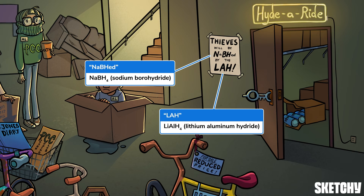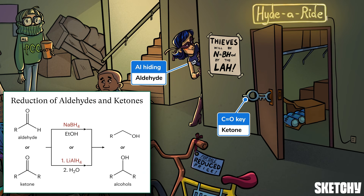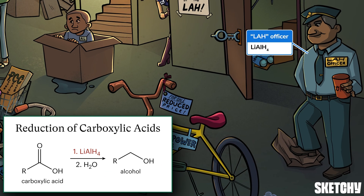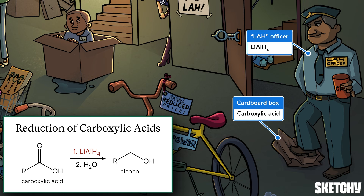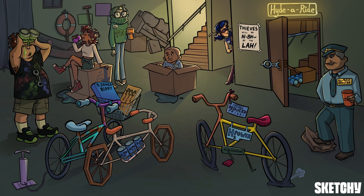Both ketones — represented by this key — and aldehydes — represented by another Al hiding — can be reduced by sodium borohydride or lithium aluminum hydride. In both cases, an alcohol, symbolized by this case of beer, will be formed. Finally, this representative from campus security is here to remind you that only lithium aluminum hydride is a strong enough reducing agent to reduce carboxylic acids — which you probably recognize as this box. He's sipping a cold one on duty to remind you that the final product of this reaction is an alcohol.